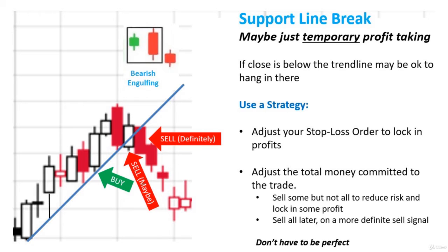The other thing you can do is adjust the total amount of money committed to the trade. Let's say we bought in at a certain amount, and we're seeing some bear signs, we're seeing support line breaks. Instead of selling everything, maybe what we do is sell some but not all of it to reduce the risk and lock in some profit. Then we can sell all of it later on as we get a more definite sell signal as it starts to make that turn. The idea is: I've made a profit, I'm going to lock in some of those profits. I think I might have a false breakout, maybe some temporary profit taking. I'm going to hang in there a little bit but with a smaller position.